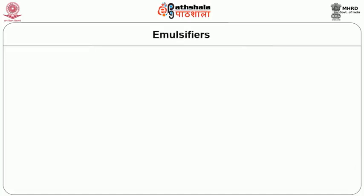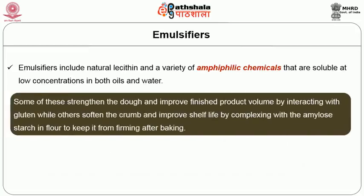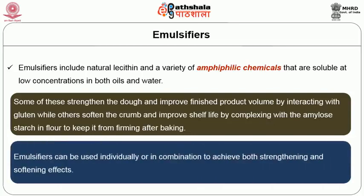Emulsifiers include natural lecithin and a variety of amphiphilic chemicals soluble at low concentrations in both oils and water. Some strengthen the dough and improve finished product volume by interacting with gluten, while others soften the crumbs and improve shelf life by complexing with the amylose starch in flour to keep it from firming after baking. Emulsifiers can be used individually or in combination to achieve both strengthening and softening effects.